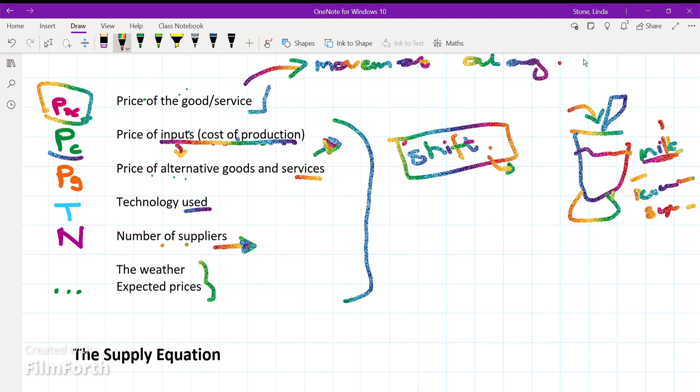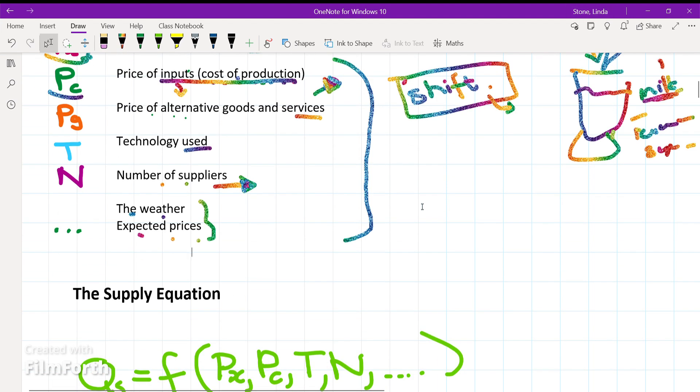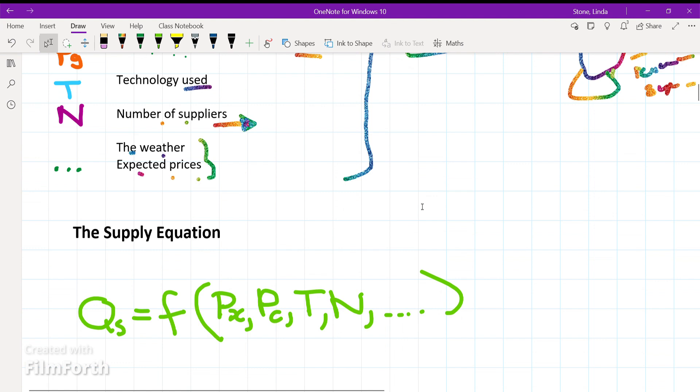And then we have other factors: the weather and expected prices. The weather, for instance, can impact especially farming. I might be able to produce less corn because of a drought or if there's too much rain. Fisheries and so on will really be affected by these types of conditions.